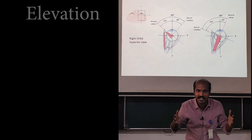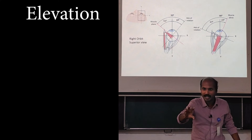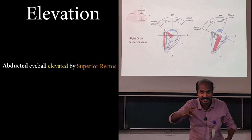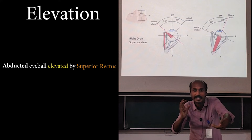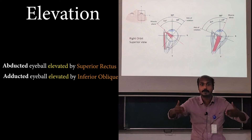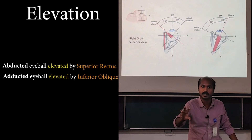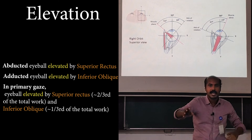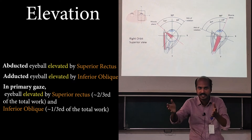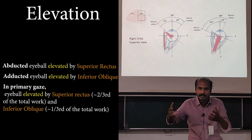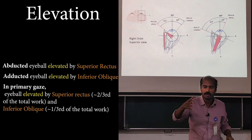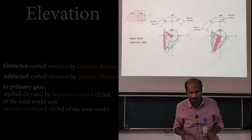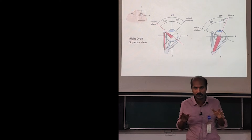If we consider elevation as a movement altogether, when the eyeball is abducted, the superior rectus is the main elevator. When the eyeball is adducted, the inferior oblique is the main elevator. Different muscles act as the primary elevator depending on eyeball position. In the primary gaze position, two-thirds of elevation is by the superior rectus and one-third is by the inferior oblique. Both act together to cause elevation across different positions of the eyeball.